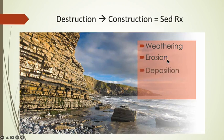Deposition happens when a stream, glacier, wind, or ocean currents slow and lose energy, and their load of sediment will fall and accumulate in layers forming strata.